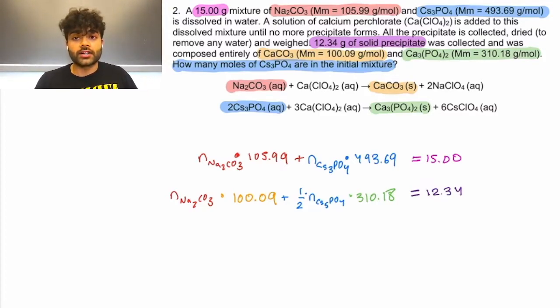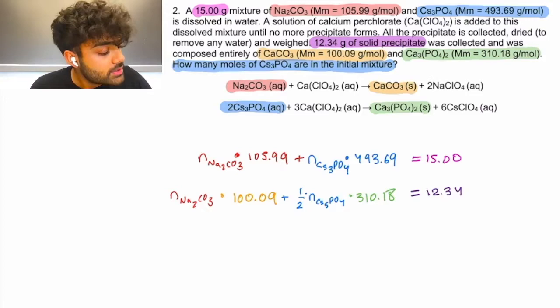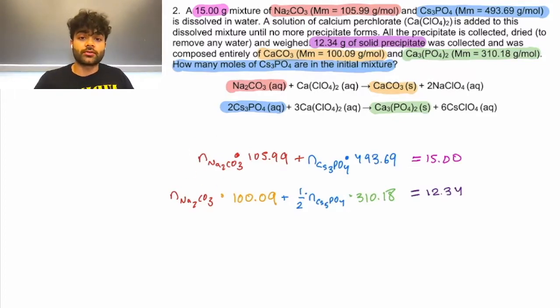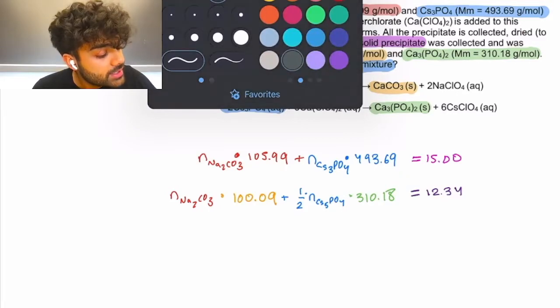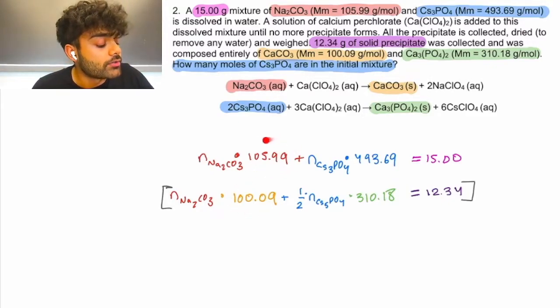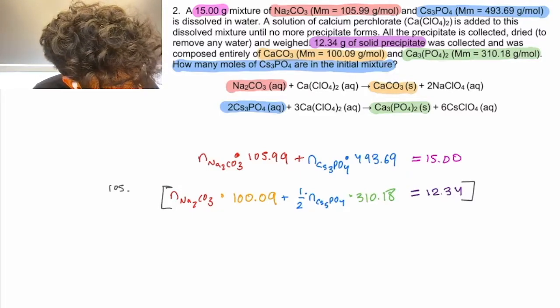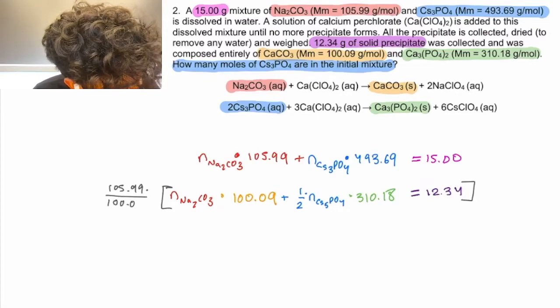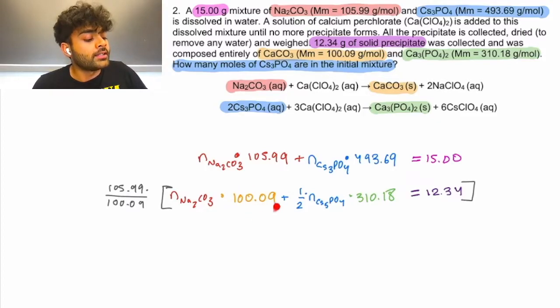Now, we are going to solve this as we have done in our previous system of equation mental math problems. Except, of course, with these numbers, we will want to use a calculator. They are not very pretty. So, we want to solve for moles of CS3PO4. So, when we are selecting for a variable to eliminate, let's eliminate Na2CO3. In order to do that, why don't we take this bottom equation, multiply it by something that will turn this 100.09 into 105.99. And that will be 105.99 over 100.09. Because with the 100.09 in the numerator, divided by the 100.09, we get 1. Multiply that by the 105.99, and then this term ends up being 105.99 once we do that multiplication.